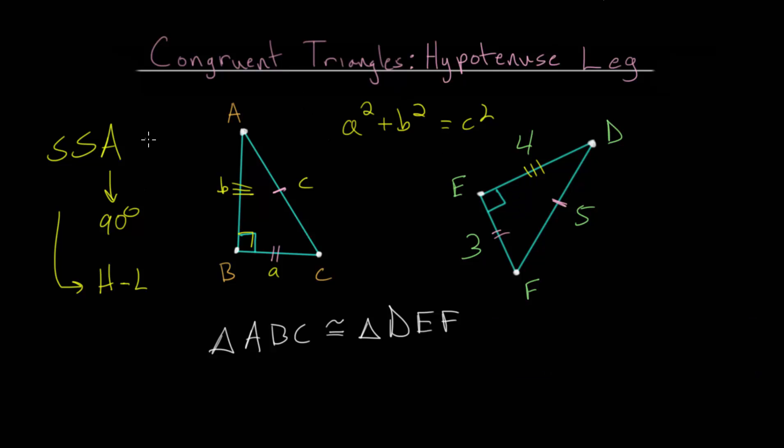Which proves that when we know two sides and an angle that's not between the two sides, and that angle is 90 degrees, that this always results in two congruent triangles, which makes this a theorem. It's something that we can prove is always true.